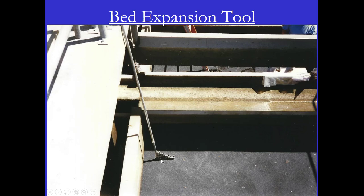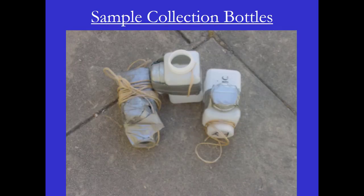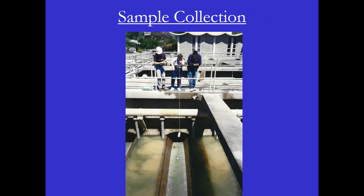Another technique to hold the bed expansion tool in place is zip ties against the railing. Here's another homemade tool for the filter inspection — just an algene bottle with a two-inch galvanized cap duct-taped against the side and some rope on top. The purpose of the galvanized cap is to make it sink to the bottom of the wash water trough and not float on the water when you throw it in to collect a backwash sample. You collect a sample every minute and then take it to the lab to determine the effectiveness of the backwash.